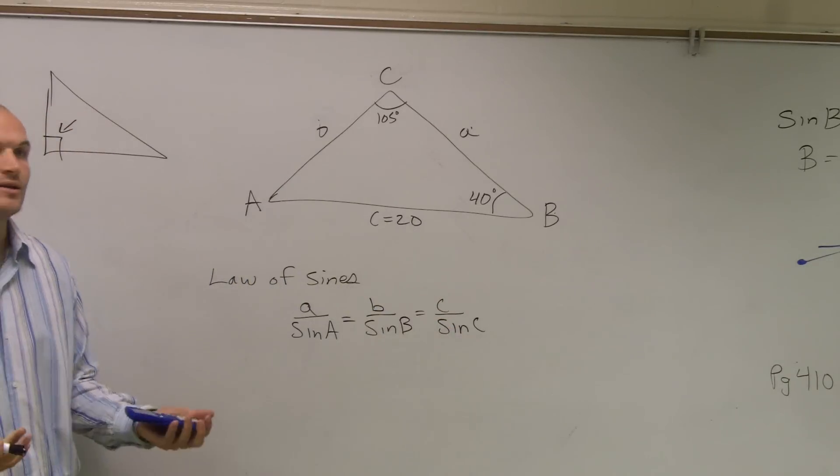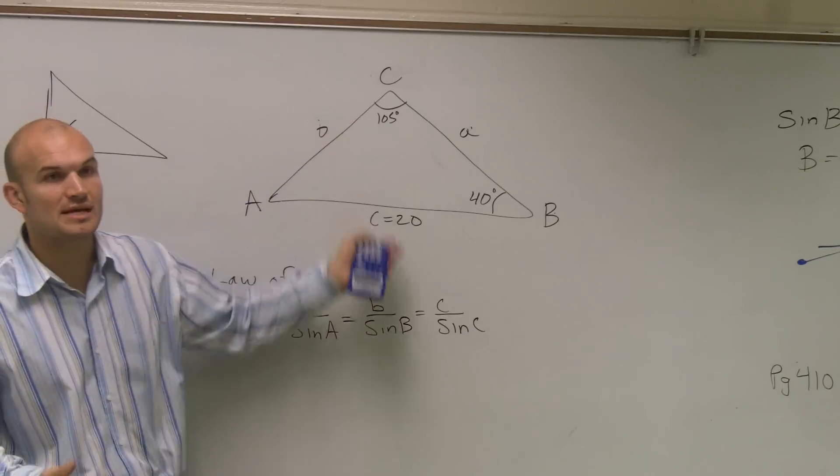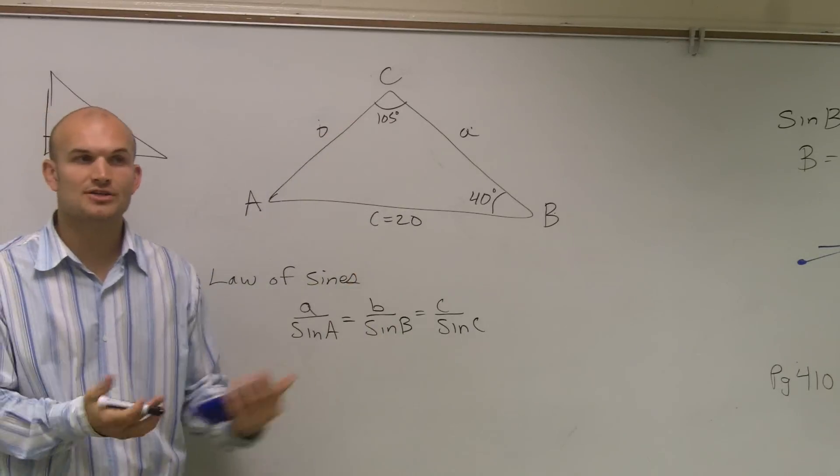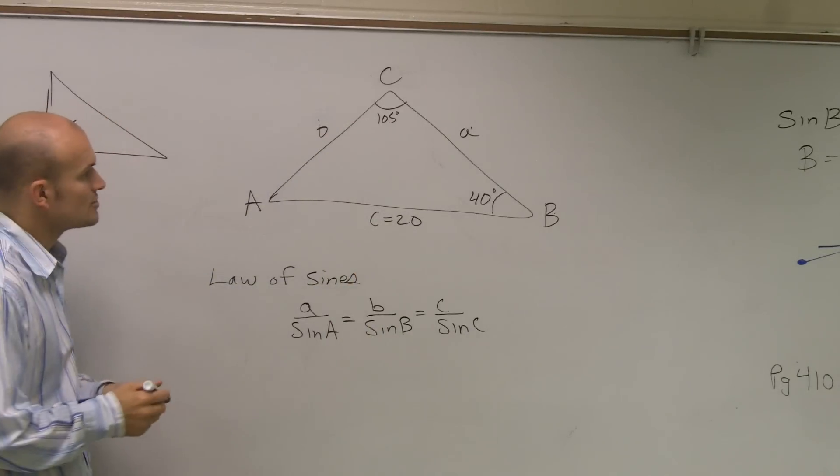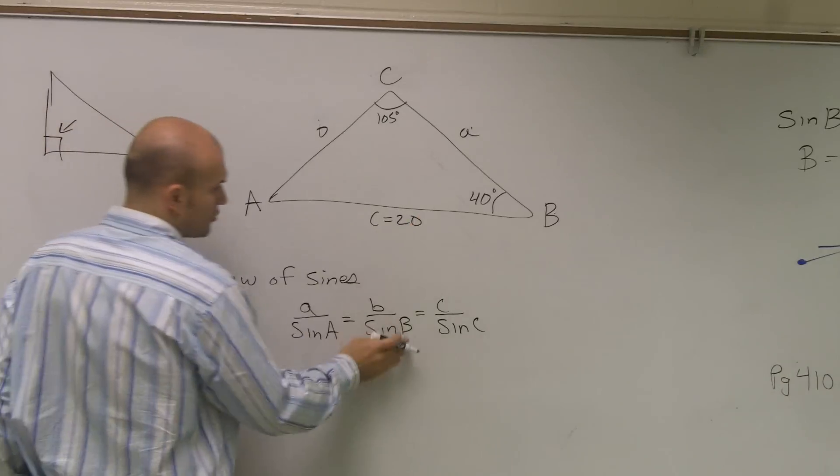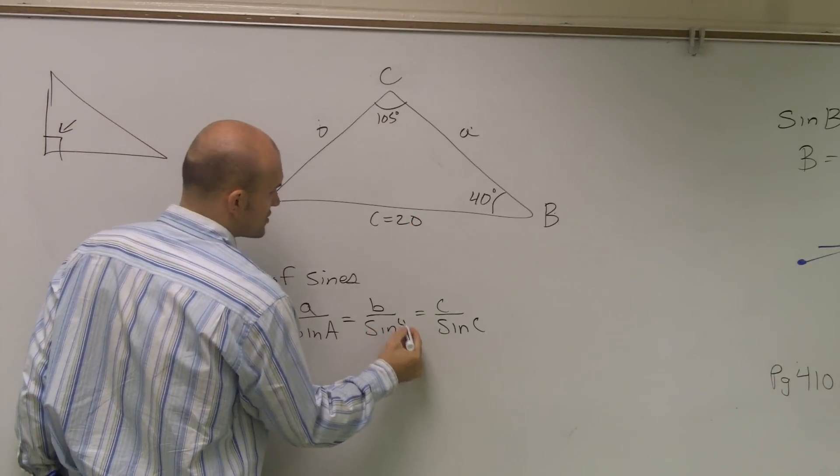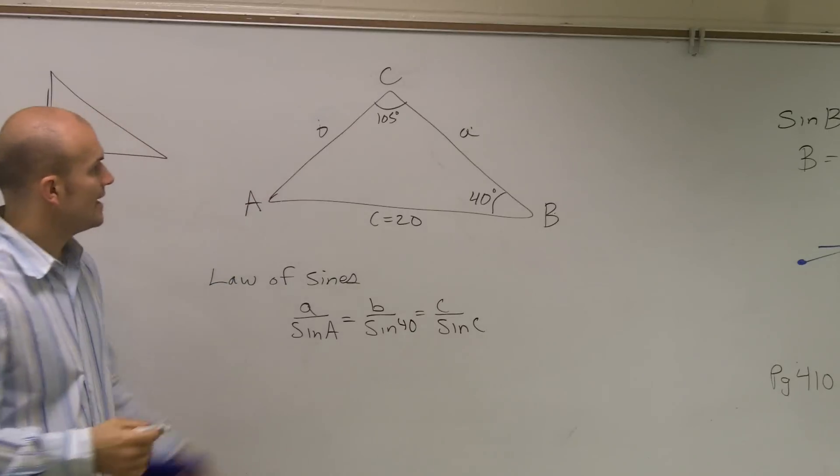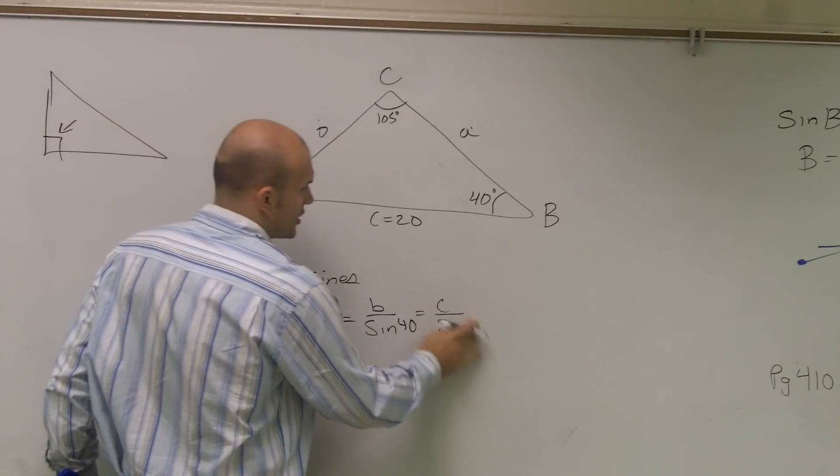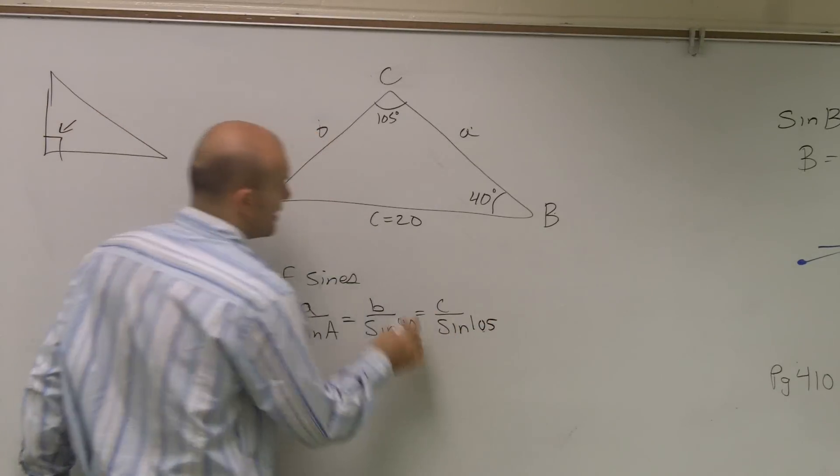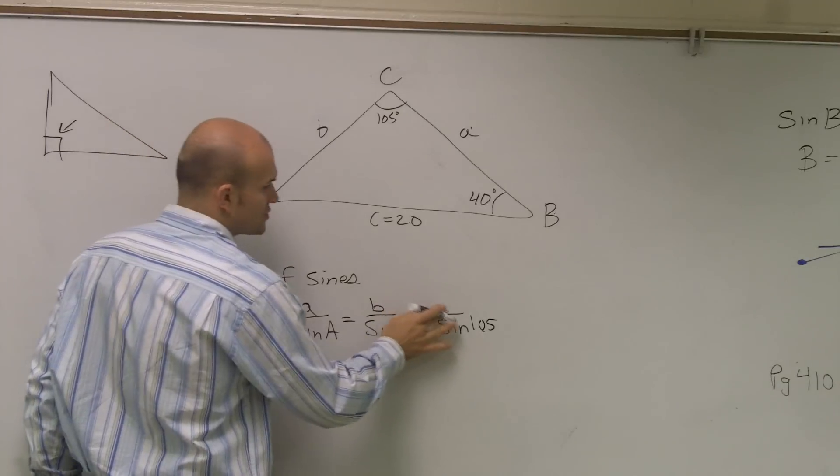So I'm going to take a look and see what values am I given right now where I can actually find one of the missing values. I look at this, I'm given angle B, which is 40 degrees, I'm also given angle C, which is 105, and I'm given the side length C, which is 20.